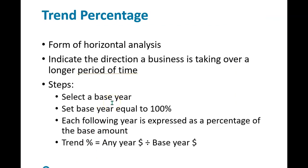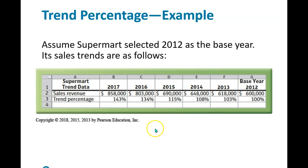Another interesting technique is the trend percentage. It's like horizontal analysis but looks at a business over a longer period of time. You select a base year — that's equal to 100% — and then every subsequent year is expressed as a percentage of the base. If it increases, it'll be like 105%; if it decreases, it'll be less than 100%. For example, 2012 is the base year and we look through 2017. Sales went from $600,000 to $858,000: a 3% increase, then 5, then 7, then a big jump of about 15%, then 19%, then another big jump from 2016 to 2017.